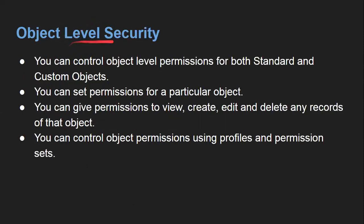The second level is object level security, which is very important. You can control object level permissions for both standard and custom objects. You can set permissions for a particular object, and give permission to view, create, edit, and delete any records of that object. If you have view permission you can see records; create permission lets you create new records; edit permission lets you update records; and delete permission lets you delete records. These four permissions can be different for different custom and standard objects.